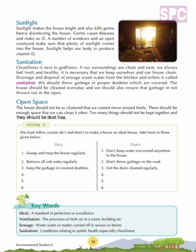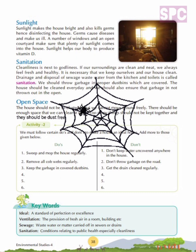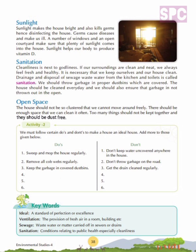Let's move on to activity 2. We must follow certain do's and don'ts to make a house an ideal house. Add more to those given below. A table is given with some do's and don'ts mentioned in columns. We have to read them and add some more points. The do's are: first, sweep and mop the house regularly; second, remove all cobwebs regularly — cobwebs are the webs made by spiders; third, keep the garbage in covered dustbins. You can mention three more good habits to maintain cleanliness in the house and nearby areas.